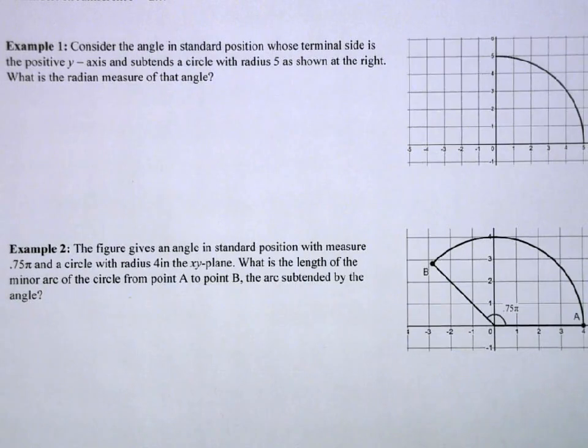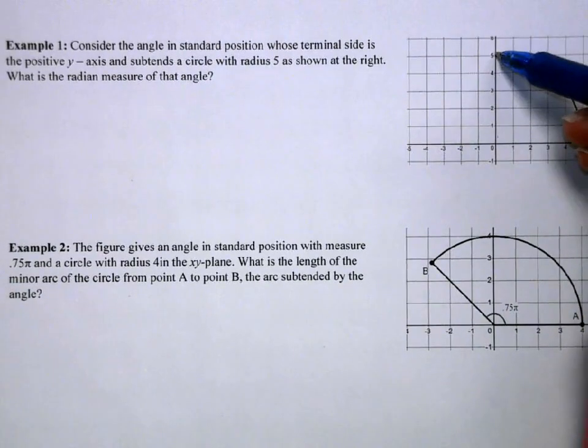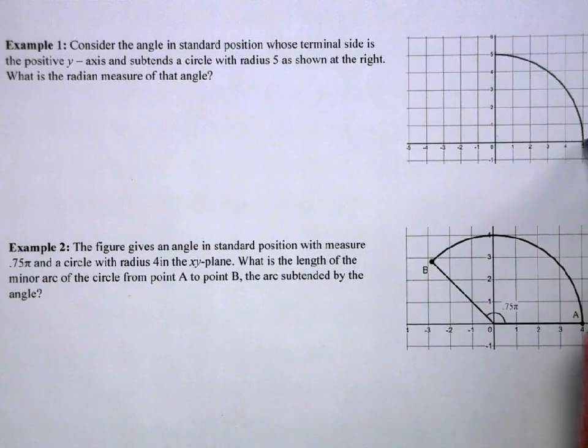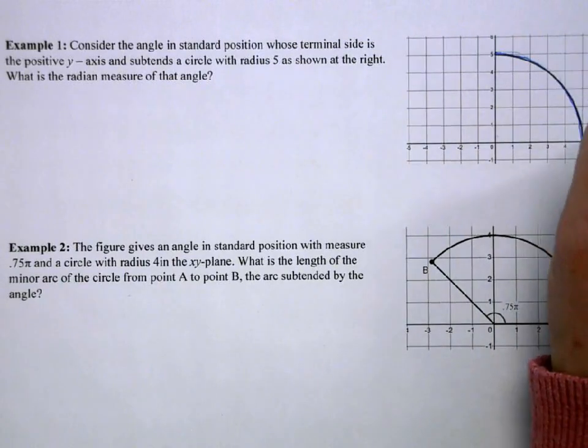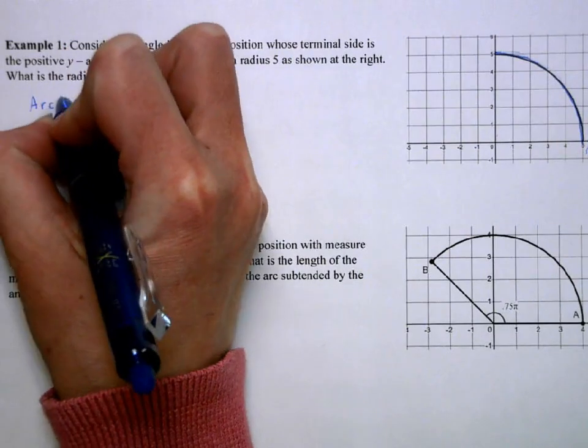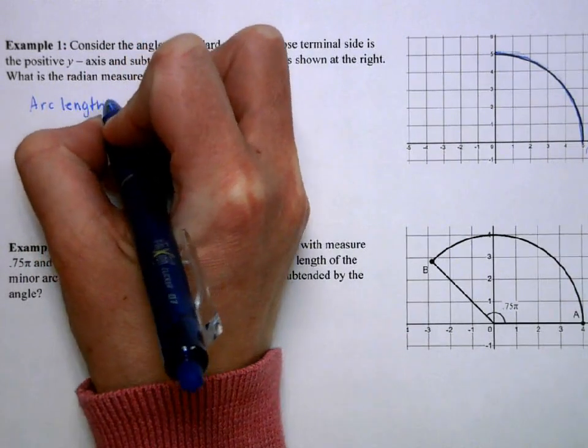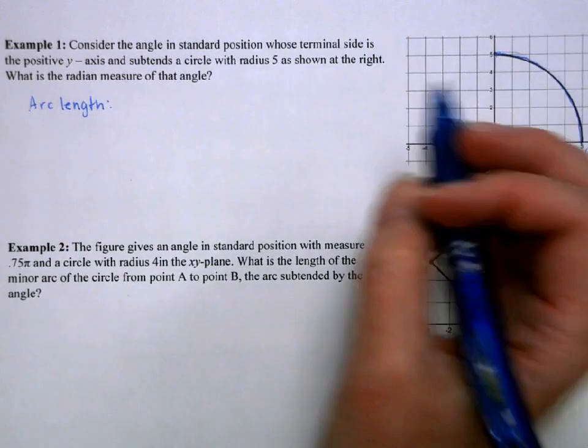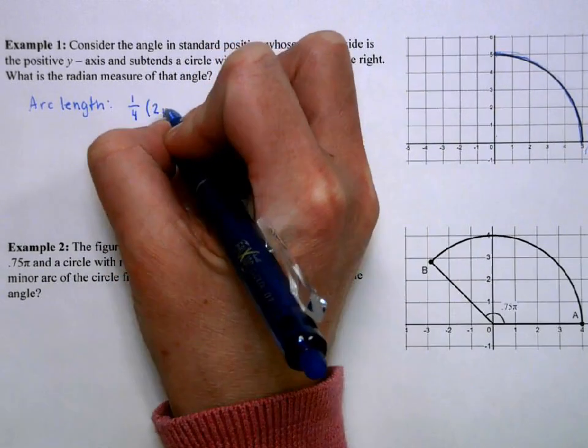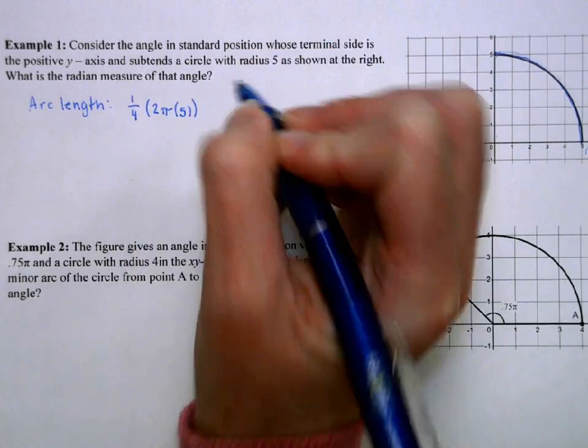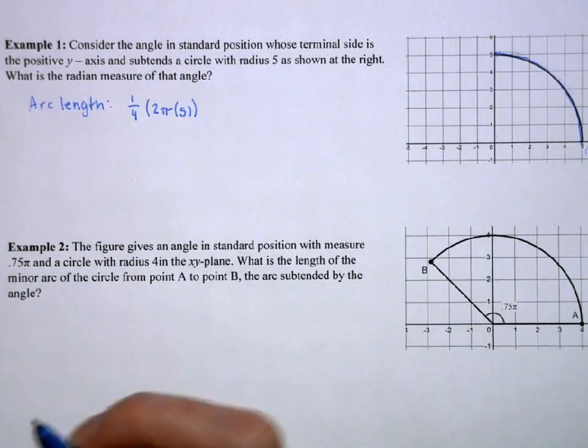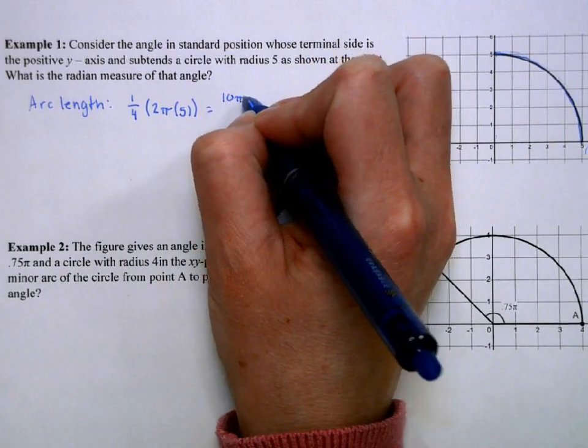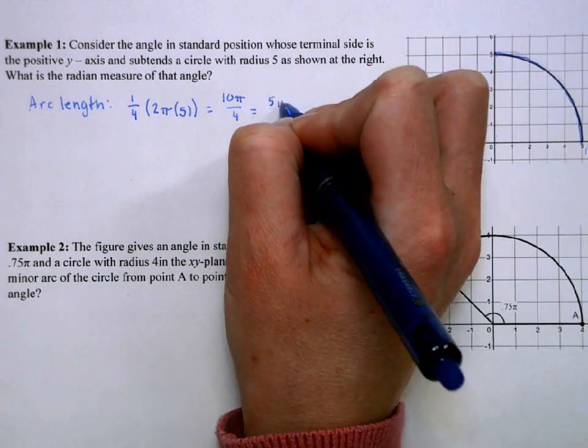Okay, so I'm going to consider a standard position angle, whose terminal side is on the positive y-axis. And it subtends a circle with a radius of 5. So, what we need to do is find this arc length and divide it by the radius. I'm going to do this separately. Okay, well, the arc length. Here, this is just a quarter of a circle. So, the arc length is going to be a quarter of the circumference, which will be 2πr, where my radius is 5. So, this would give me 10π over 4, or 5π over 2.